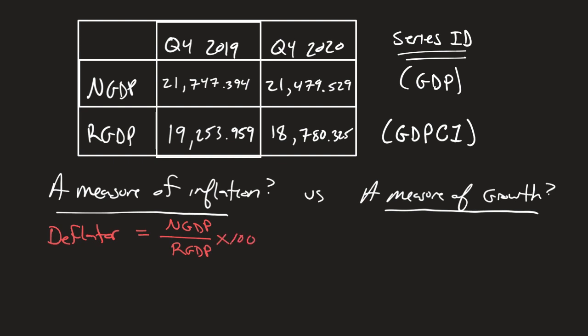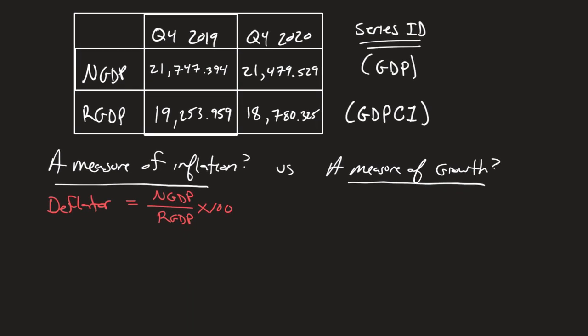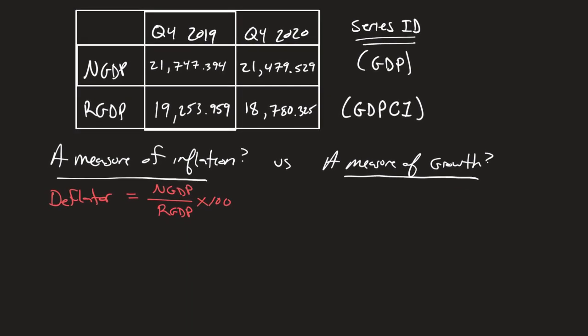So notice that neither of the nominal nor real GDP are exactly the same. So this must mean that one of these things is not the base year. The real GDP on FRED is pulling chained 2012 dollars. So that's why we're seeing that 2019 and 2020 are both different from each other. So let's go ahead and calculate that for each. I'll make this a little smaller so that we can fit everything on the same screen.